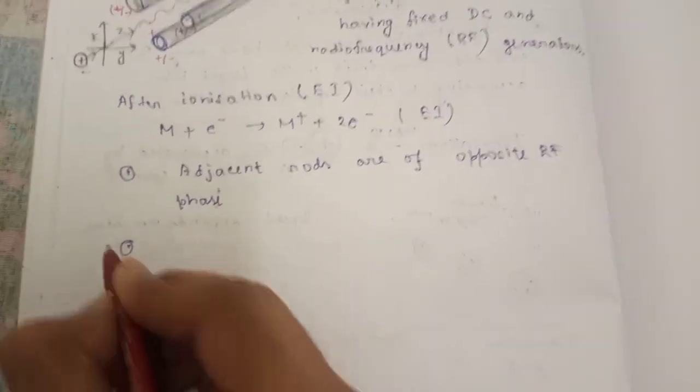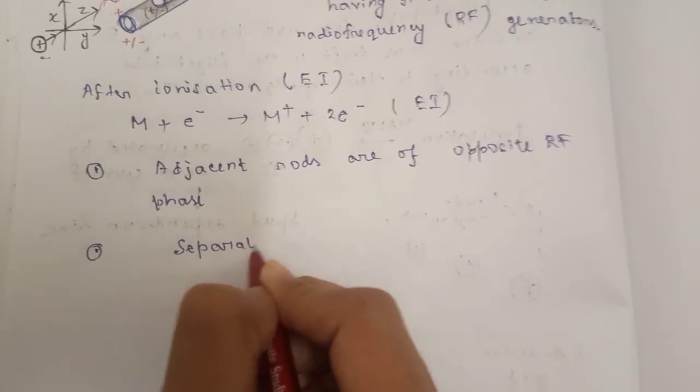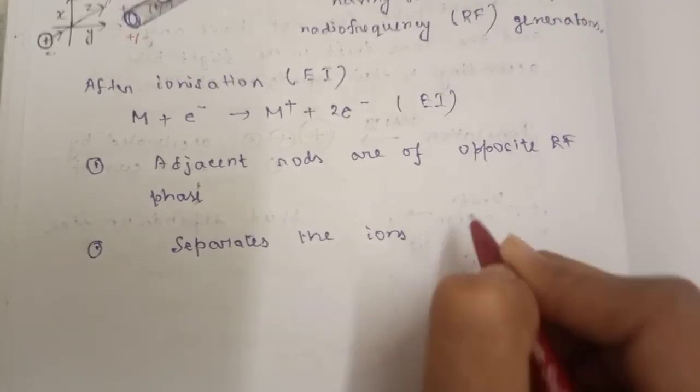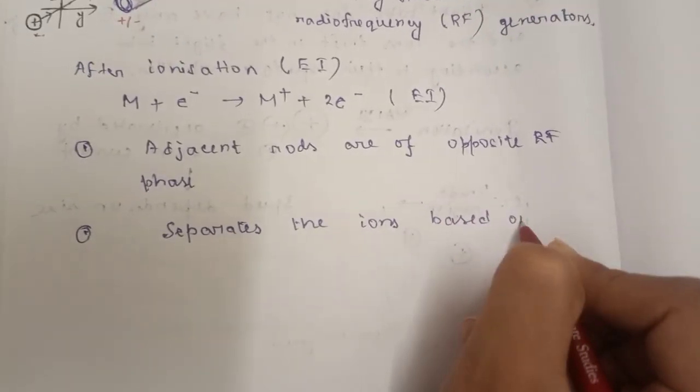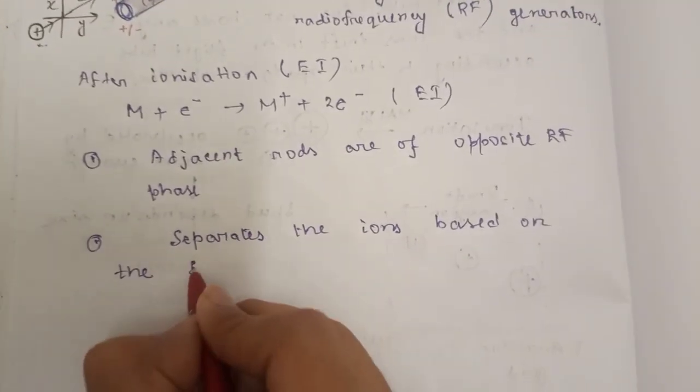It actually separates the ions based on the flight trajectories through oscillating electric field in between the quadrupole.